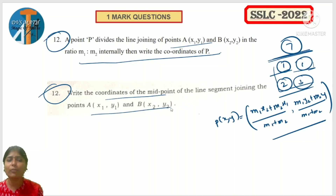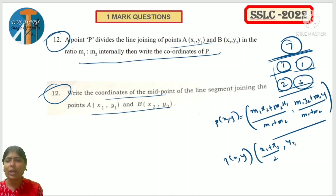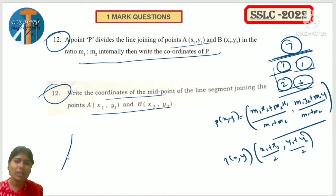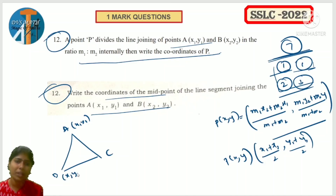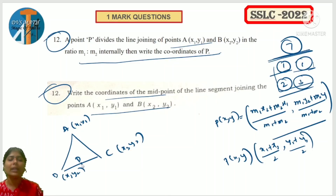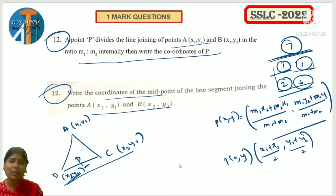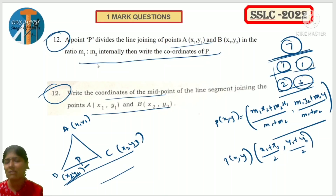Midpoint formula: midpoint of points (X1,Y1) and (X2,Y2) is ((X1+X2)/2, (Y1+Y2)/2). For a triangle ABC with vertices (X1,Y1), (X2,Y2), (X3,Y3), if D is the midpoint of BC, then coordinate of D is the midpoint of B and C, which is ((X2+X3)/2, (Y2+Y3)/2).